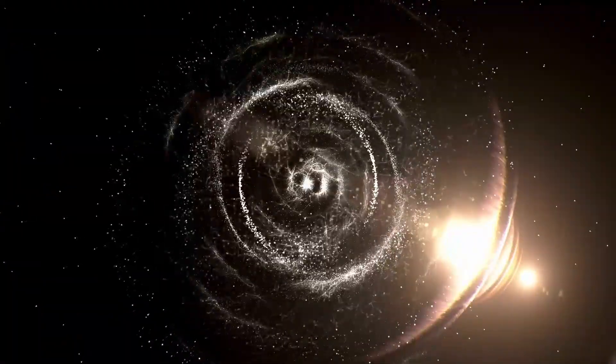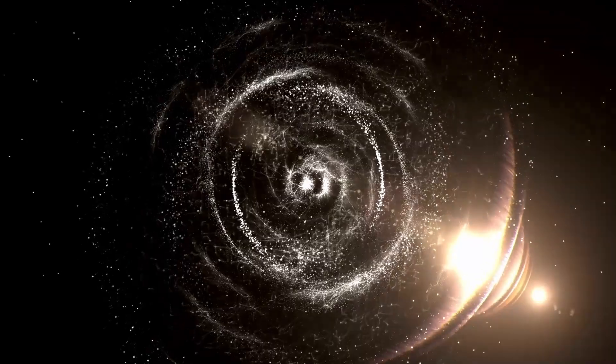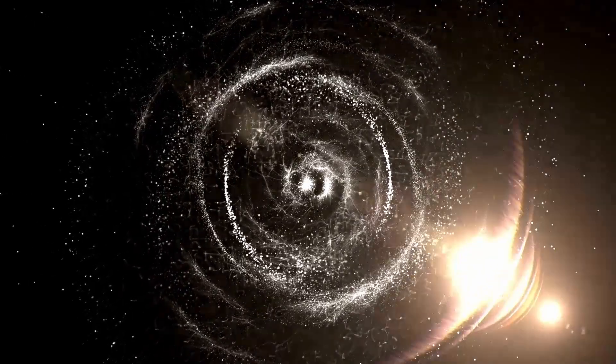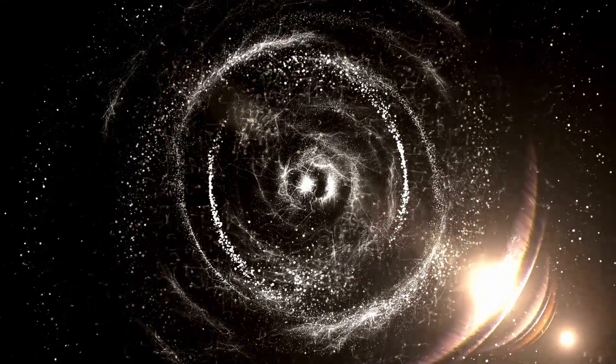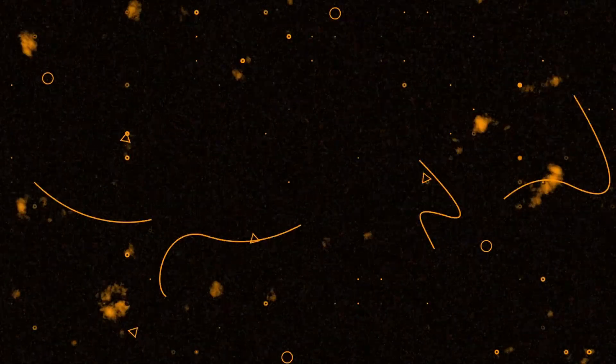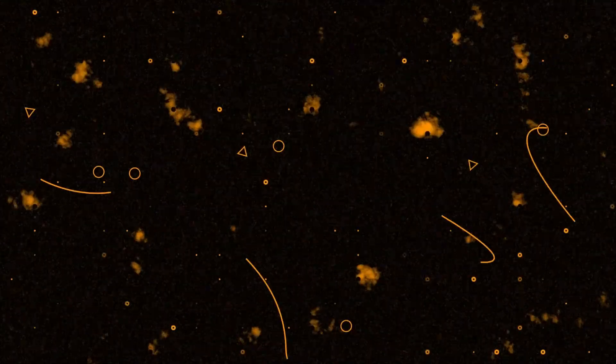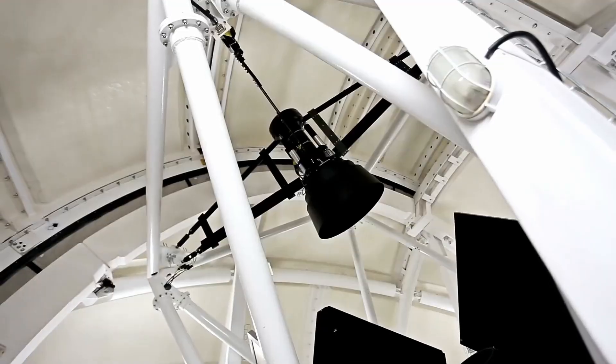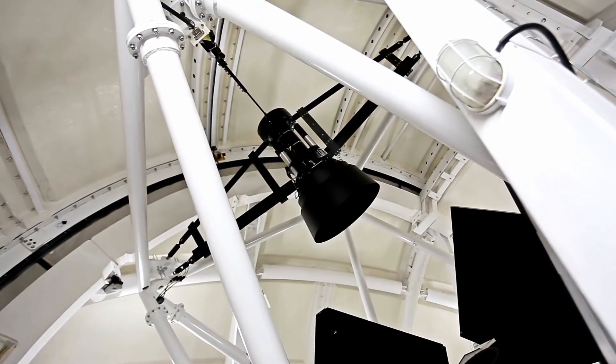Despite being nearly four times farther from the sun than Earth, 3 Atlas is unusually bright, too bright. If it were a typical rock, it would have to be massive, 20 kilometers wide, to reflect that much light. But it doesn't seem to have the mass. It's reflecting more light than it should, like it's made of something metallic or artificially smooth.